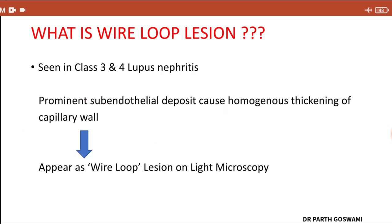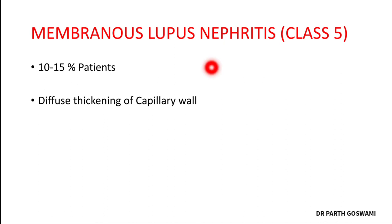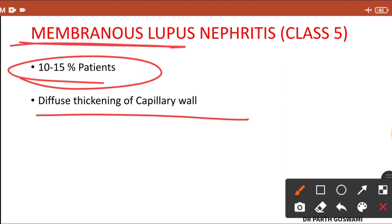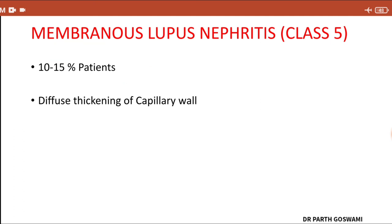Class 5 is membranous lupus nephritis, seen in 10 to 15 percent of SLE patients. As the name suggests, there is diffuse thickening of the glomerular basement membrane and glomerular capillary wall.